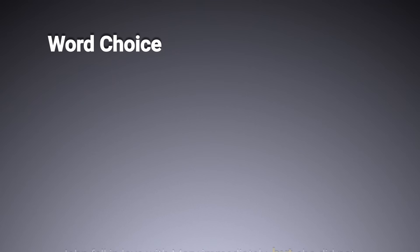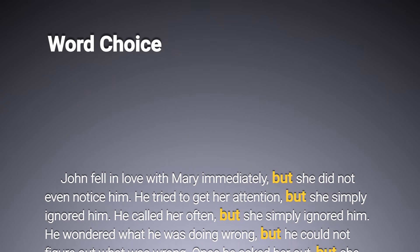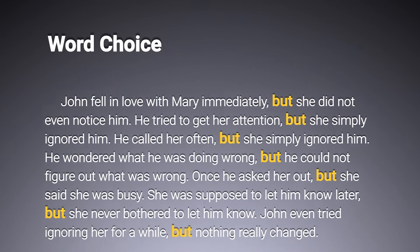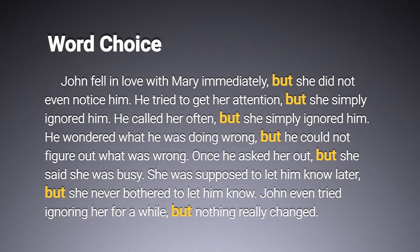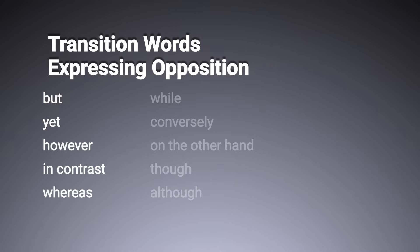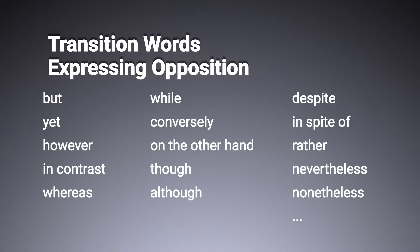All these sentences express the same thing. Why are there so many ways of expressing the same thing? We had a video about this recently — word choice. Let's say you're writing a long paragraph and you want to express opposition between several ideas. You don't want to repeat yourself saying "but" everywhere. No problem — you can choose from among many transition words that express the same thing and avoid repetition.